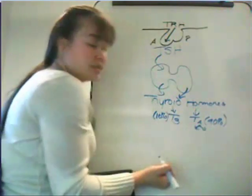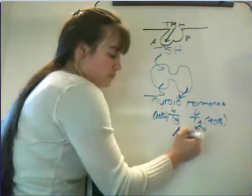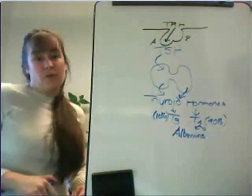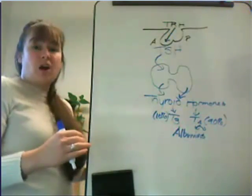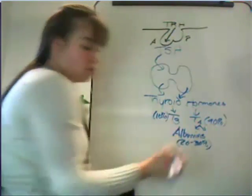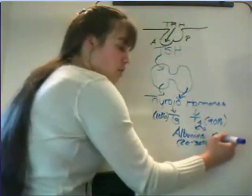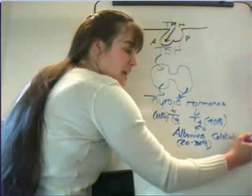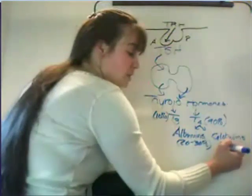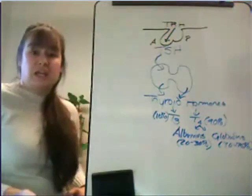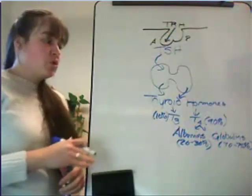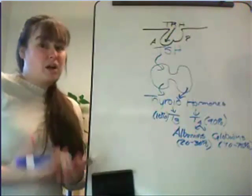There are two types of proteins that T4 attaches to. The first are albumins — giant proteins that are the most abundant protein found in circulation. Albumins bind some of this T4, but only 20 to 30% end up bound to albumin. The remaining are bound to globulins, the second most numerous protein in circulation and the preferred binding site for T4. Approximately 70 to 75% of the proteins binding T4 are globulin in nature — specifically called thyroxine binding globulins.